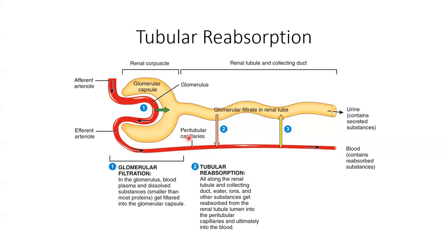To appreciate the magnitude of tubular reabsorption: approximately 180 litres of water enters the Bowman's capsule after moving through the filtration membrane each day. Around 178 to 179 litres are reabsorbed back into the peritubular capillaries and vasa recta, and we usually only excrete about one to two litres as urine.